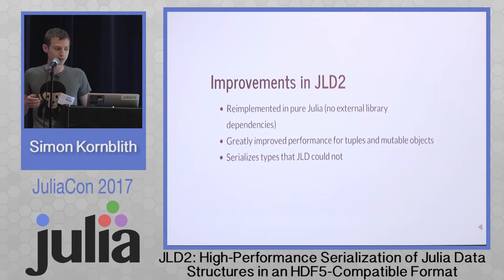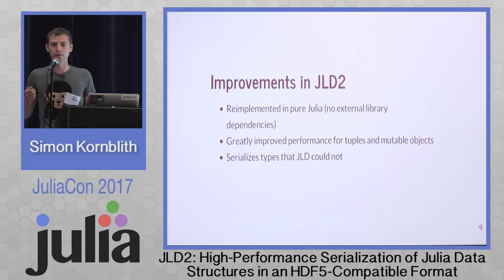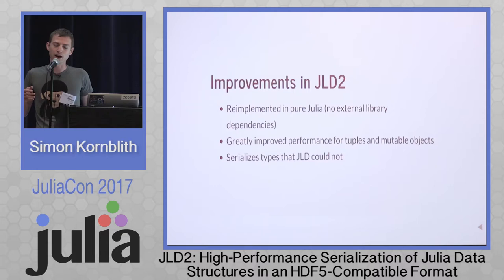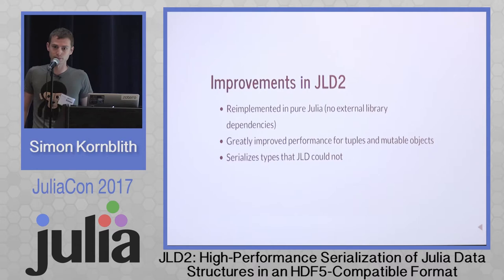JLD2 makes several improvements to the functionality previously available in JLD. The big change is that I re-implemented everything in pure Julia. JLD was previously writing HDF5 files using the HDF5 C library, but JLD2 writes HDF5 files in pure Julia code. As a result, we get greatly improved performance for tuples and mutable objects, which were difficult cases for the old JLD code. And we can also serialize types that JLD previously had trouble with — most cases where JLD failed will now work in JLD2.